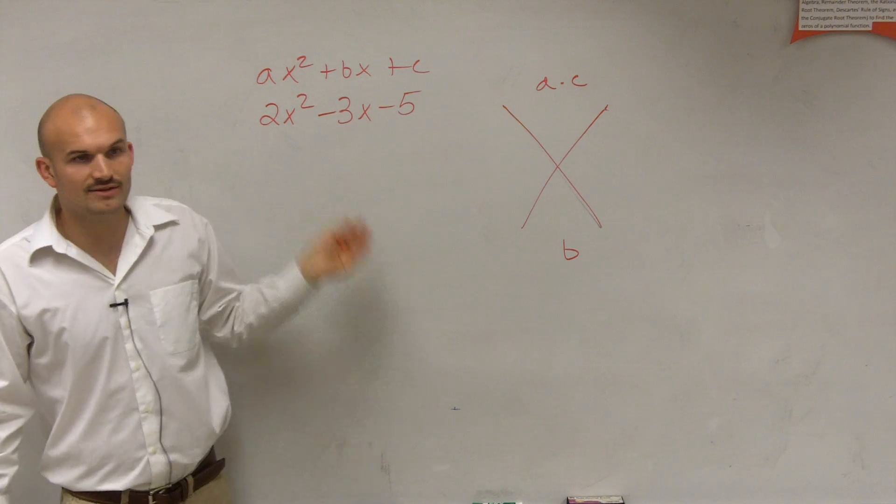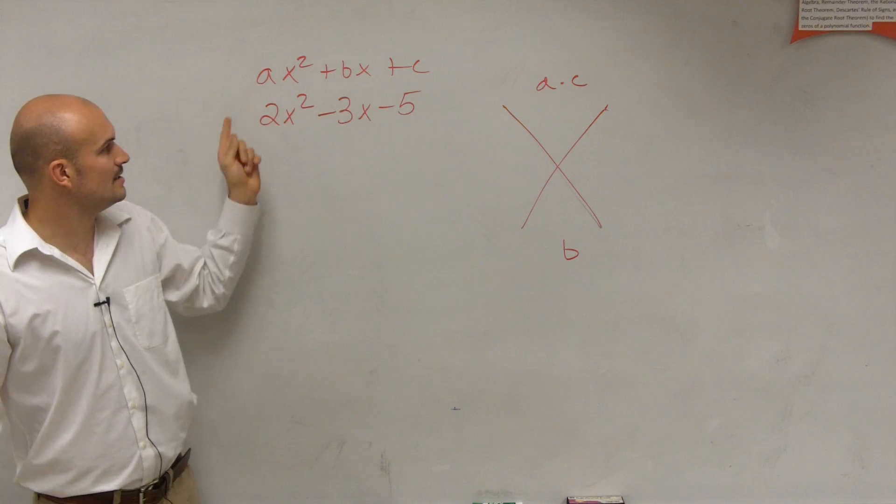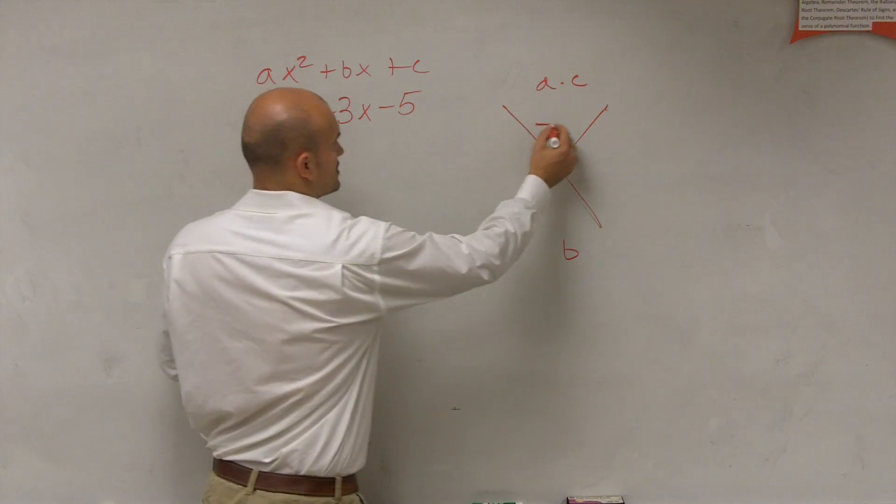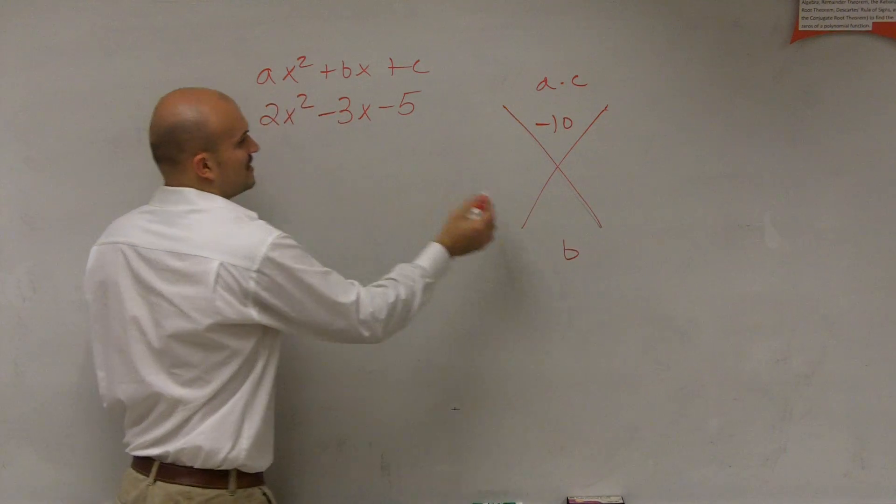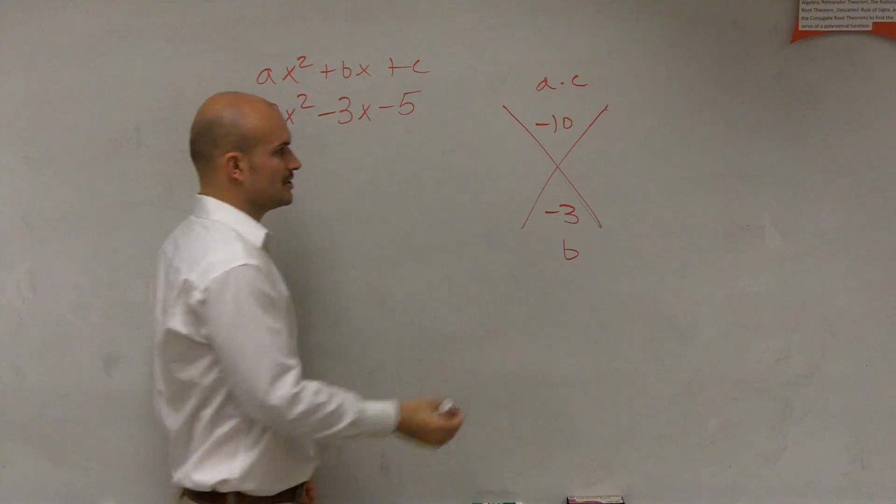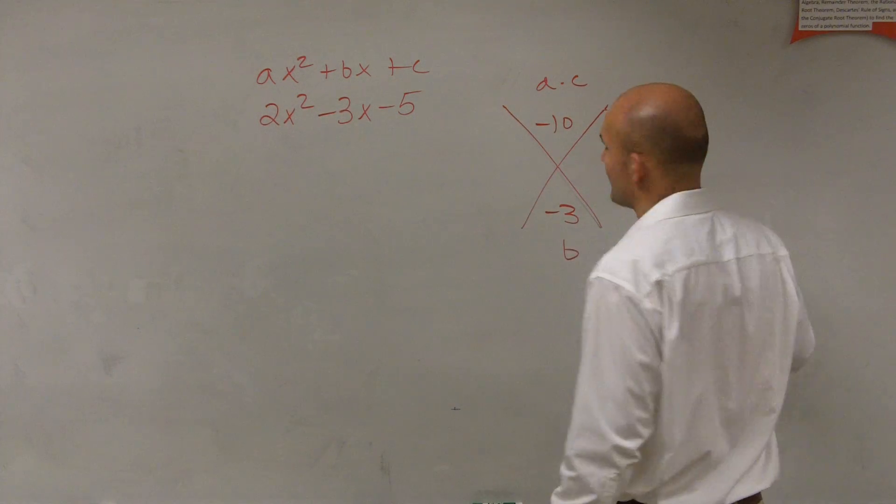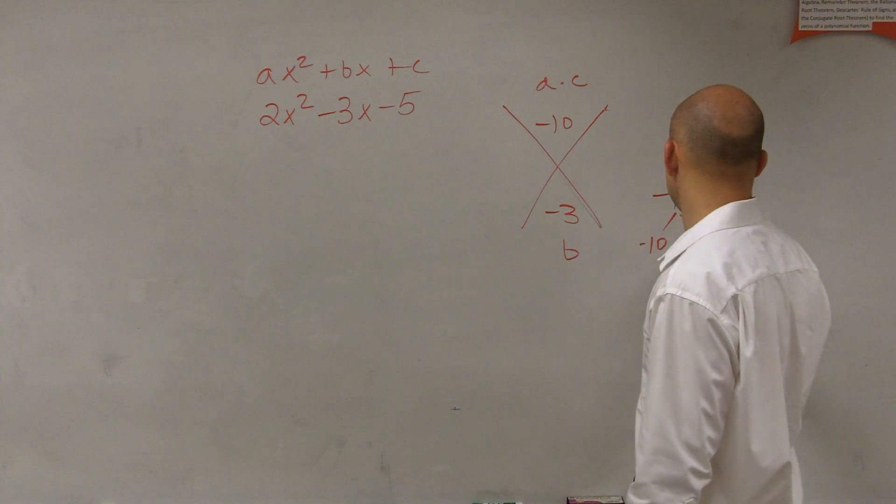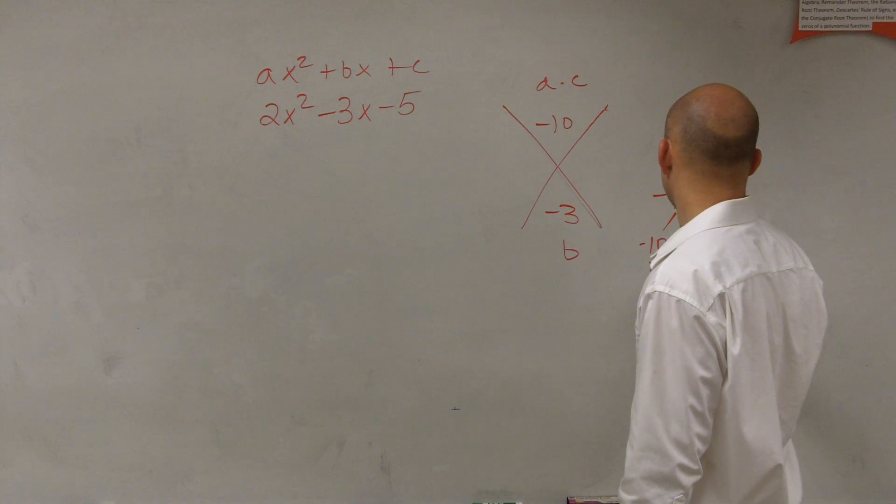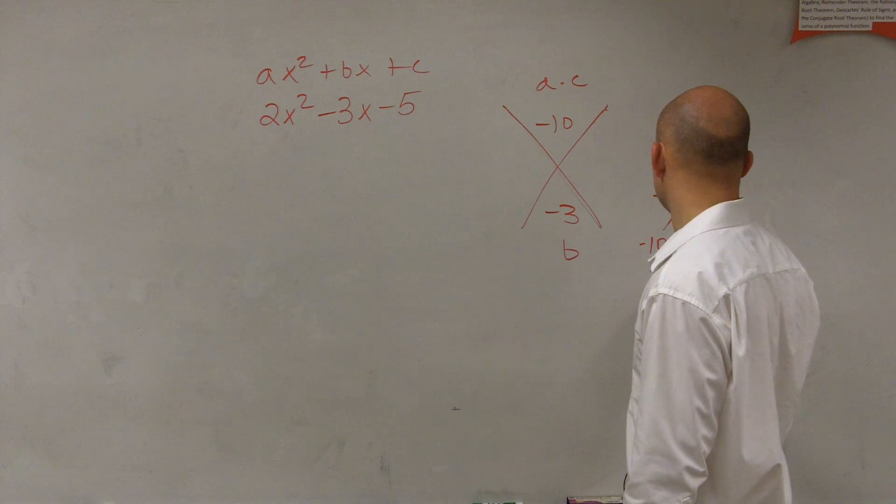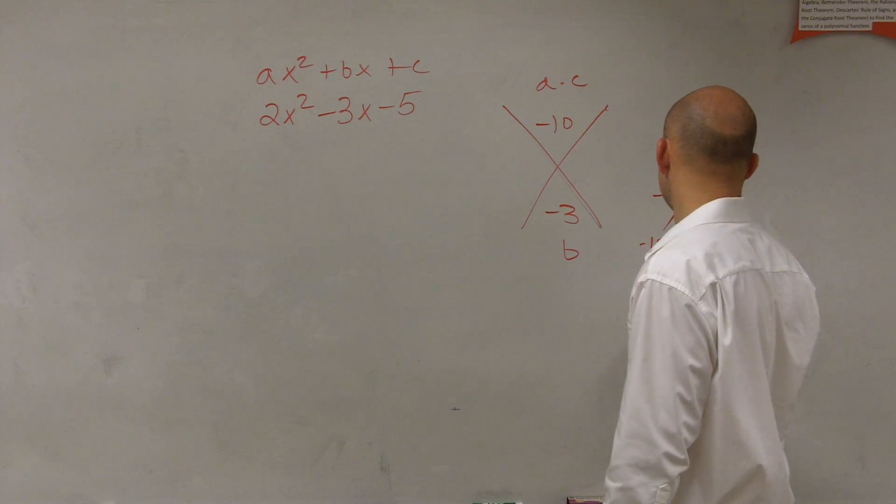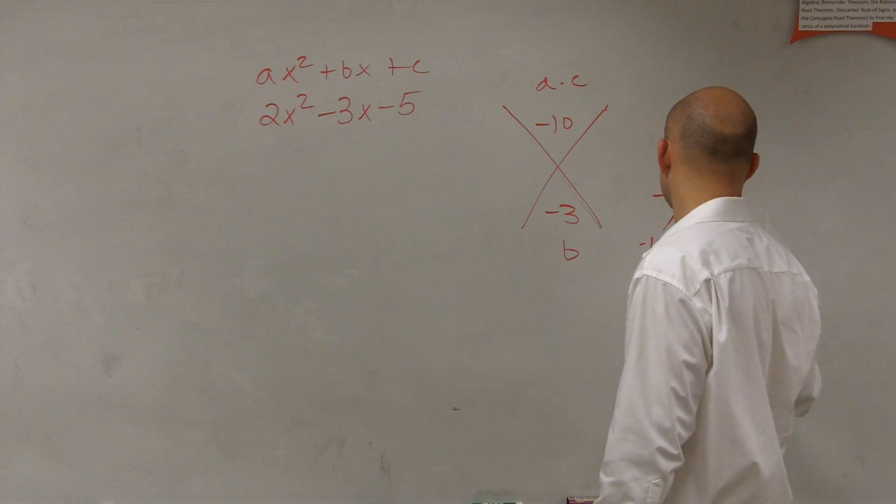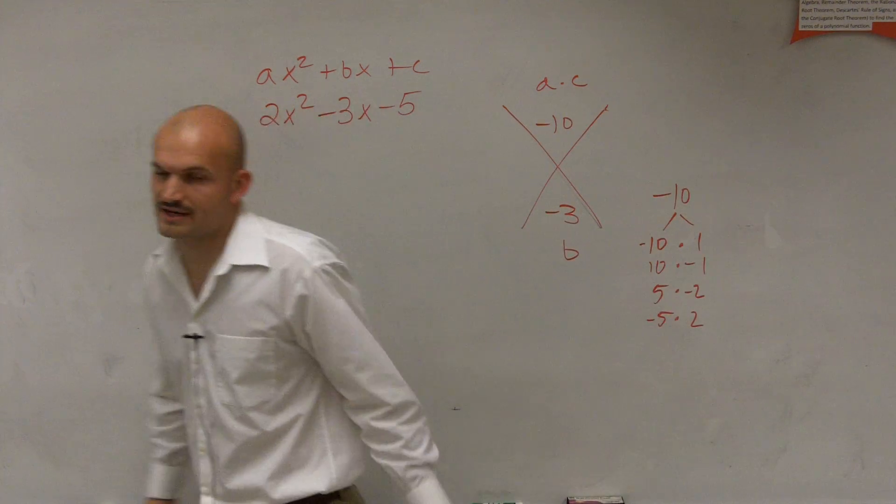So to figure out what the factors are, I do a times c. 2 times negative 5, which is negative 10. My b is negative 3. So now what I'm going to do is I'm not really going to factor negative 10, but I'm just going to list all the factors of negative 10. Because all of these numbers multiply to give us negative 10. So these are factors of negative 10. One has to be positive. One has to be negative for it to be negative 10.